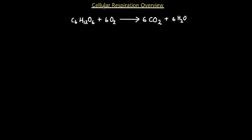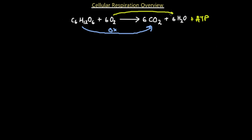Consumers that consume the energy made by photoautotrophs will consume glucose or any other organic compound and use oxygen to perform this reaction, producing lots of ATP along with water and CO₂, which are released into the atmosphere for photoautotrophs to pick up and continue their cycle. In this overall reaction, the glucose molecule is oxidized, and the oxygen being converted to water is reduced.